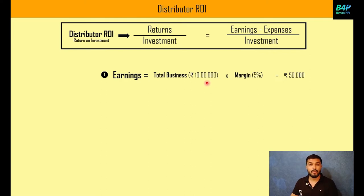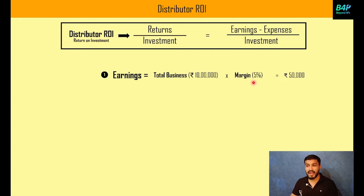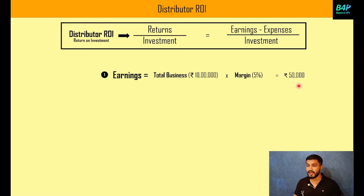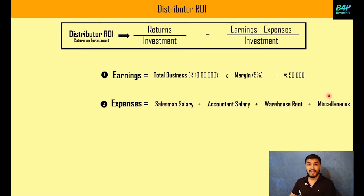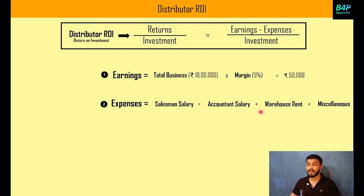These three components are relevant for a distributor's ROI. Stock is sold to wholesalers and retailers, and the margin of sale is 5% on sales. So, 10 lakh × 5% = 50,000 are the earnings of a particular distributor — that's the first component. In the second component, expenses: a distributor pays salesman salary, delivery van costs, accountant salary, warehouse rent, and miscellaneous expenses like electricity bills.